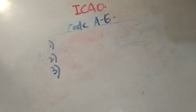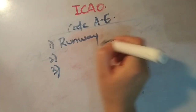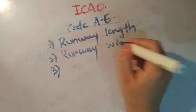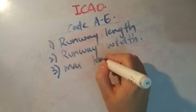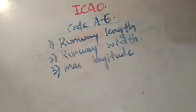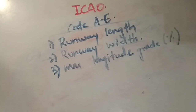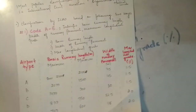तीन चीज़ें रखनी हैं दिमाग में: जब हम letters का classification देखेंगे, it is talking about runway length, runway width, and maximum longitudinal grade. Grade is the slope at which your pavement exists. Grade बहुत ज़रूरी होता है ताकि water accumulate न हो और overturning न हो vehicle का — इसलिए grade की ज़रूरत होती है, in percentage. तो for example, Type A airport की runway length will range between 2100 to greater than 2100 meters.